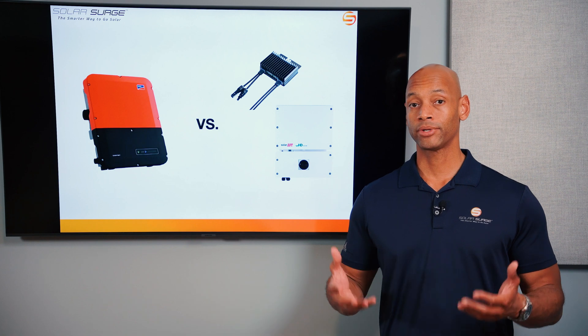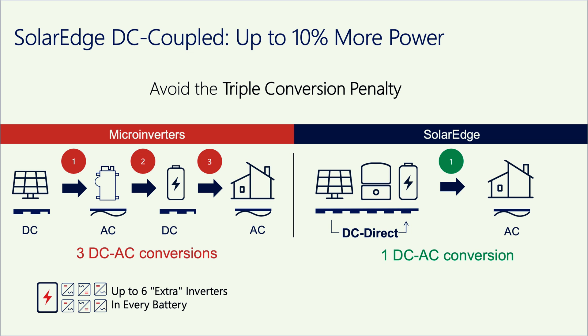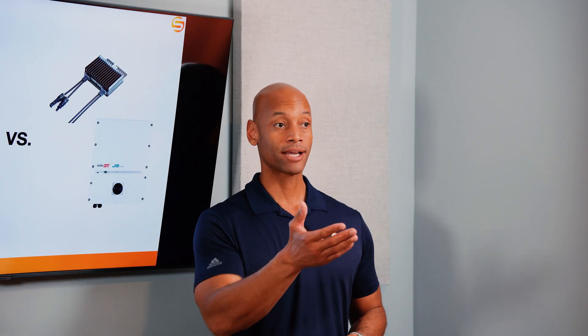The other challenge — especially now that we're integrating solar with battery storage — is that if you wanted to use your solar panels to charge a battery, you incurred what we call the triple conversion penalty. You have DC from solar cells being converted to AC by the microinverters, sent down to ground level, and then if you want to charge a battery, you have to use a rectifier to convert that AC power back to DC, because battery cells are natively direct current, just like solar cells.